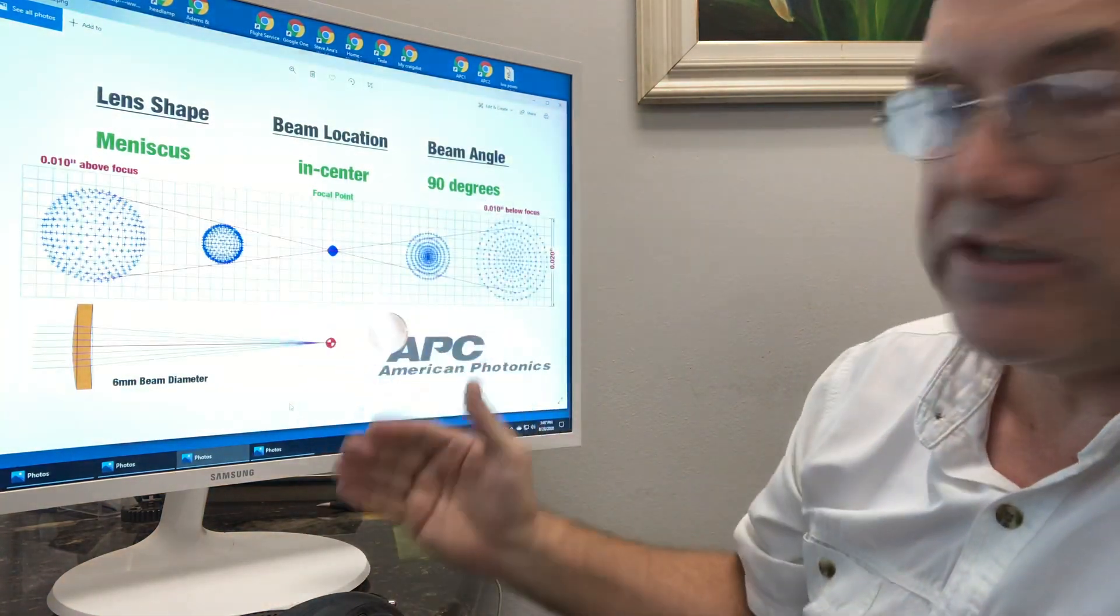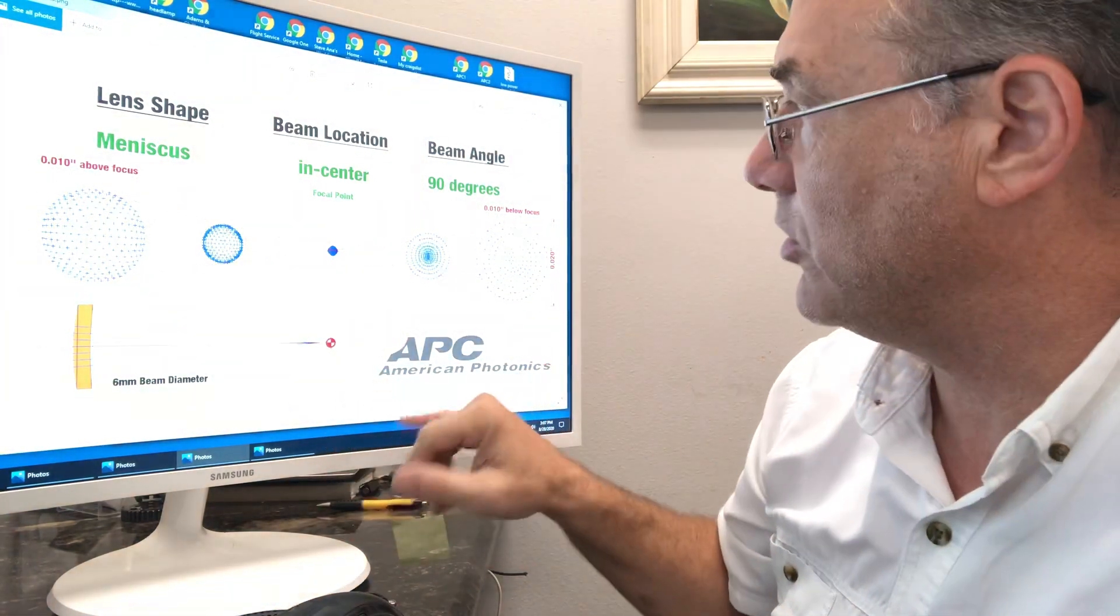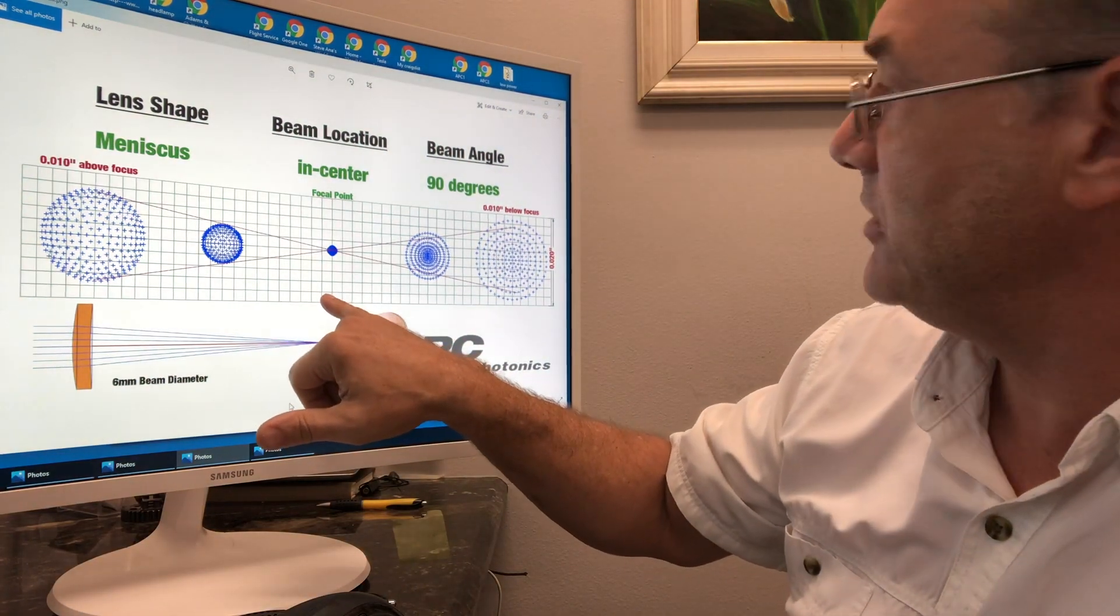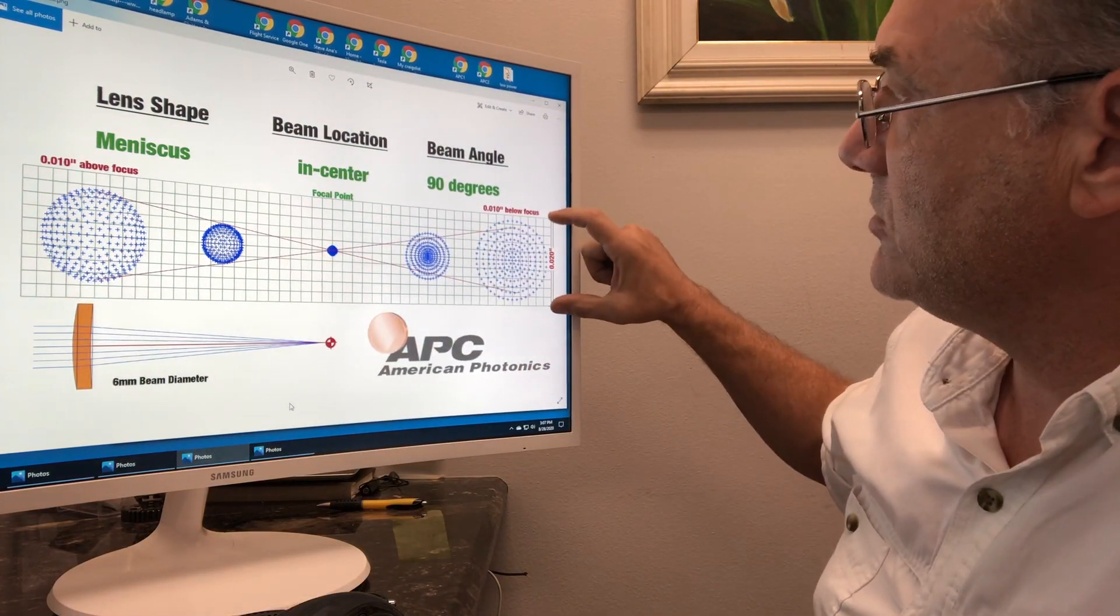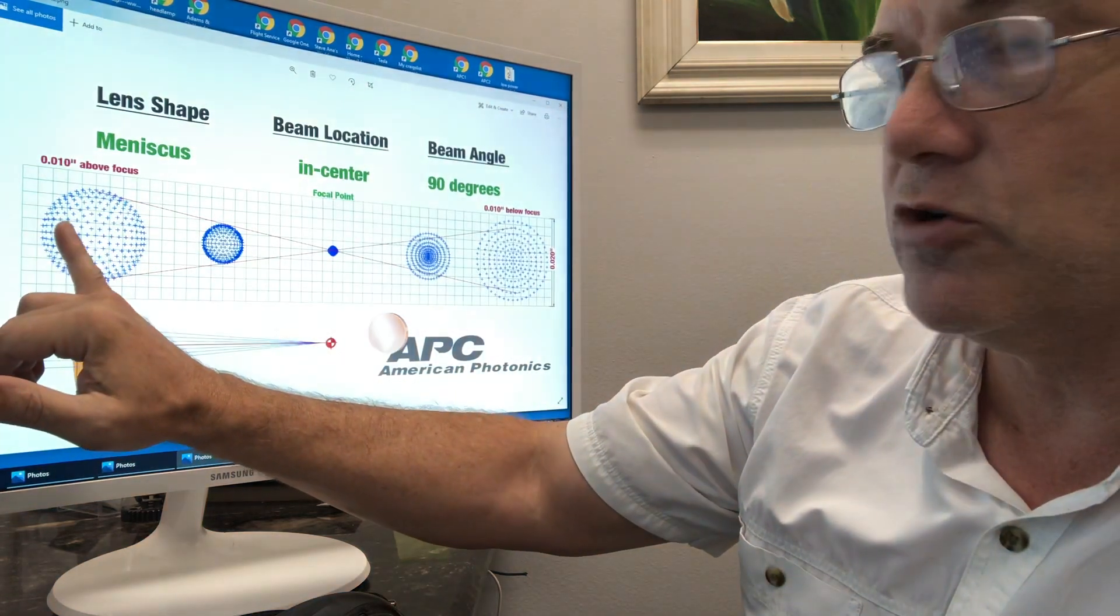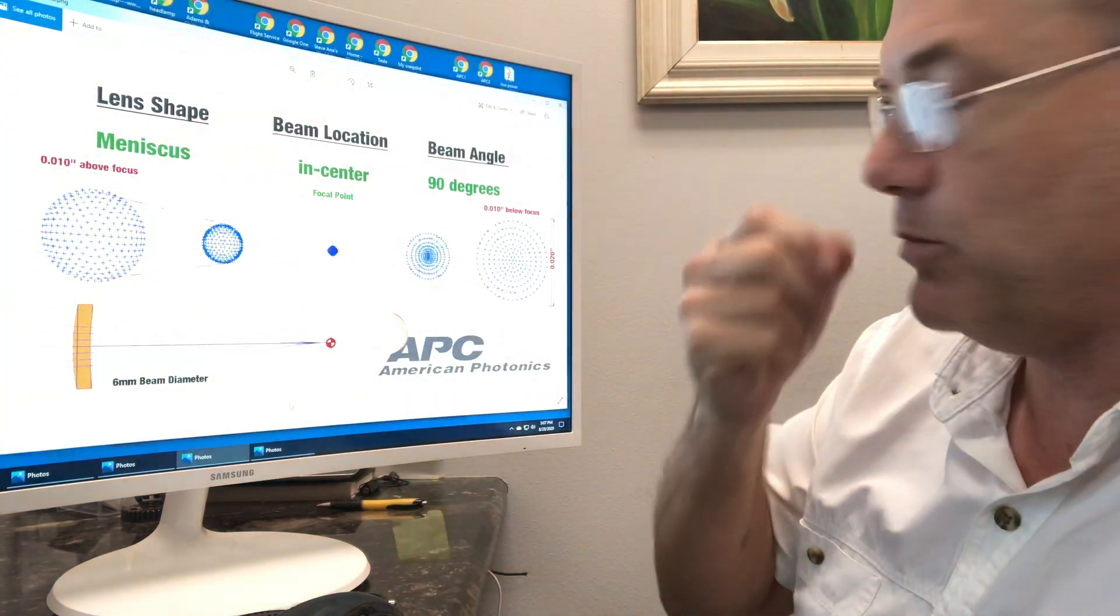This would be perfectly set up. This is the theoretical perfect, which doesn't exist in the world. But each of these boxes is equal to 2-thousandths of an inch. This is 20-thousandths. This is 10-thousandths above the focal point, the perfect focal point, and this is 10-thousandths below the perfect focal point.